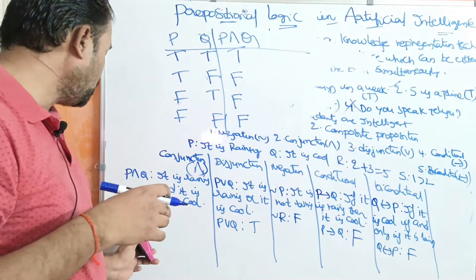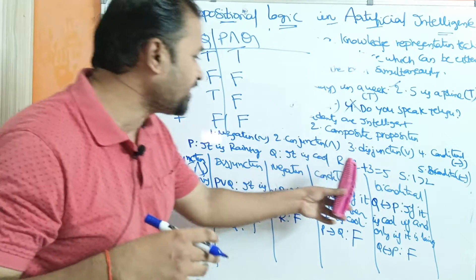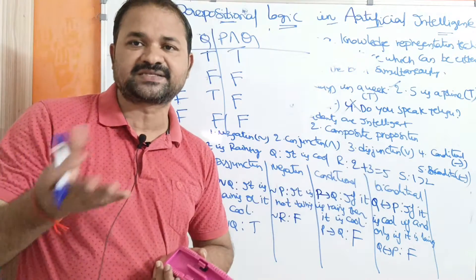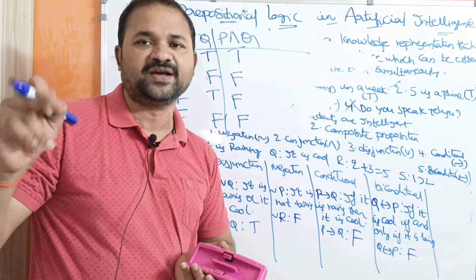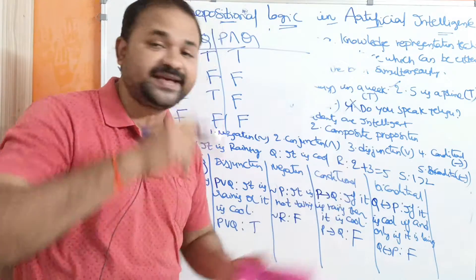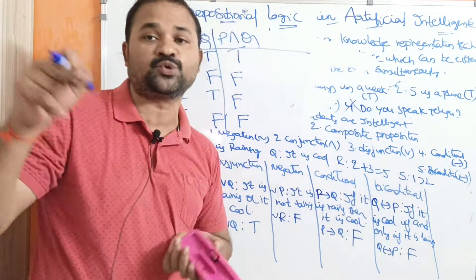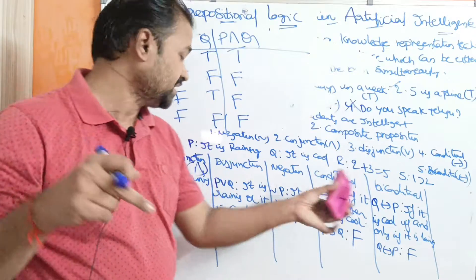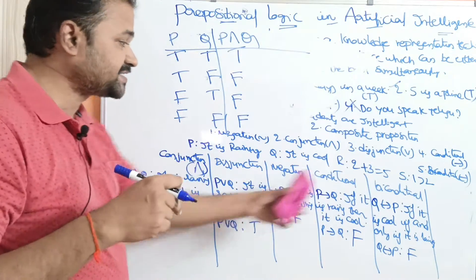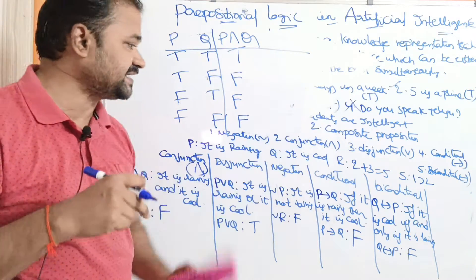Let us see the result of R ∧ S. R is '2 + 3 = 5,' which is true. S is '1 > 2,' which is false. Using the AND operator, R ∧ S means true AND false, which returns false as the result.